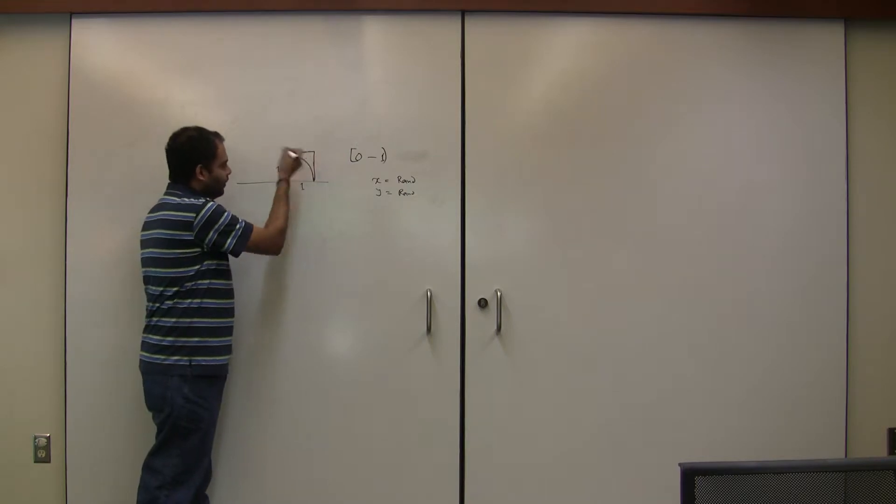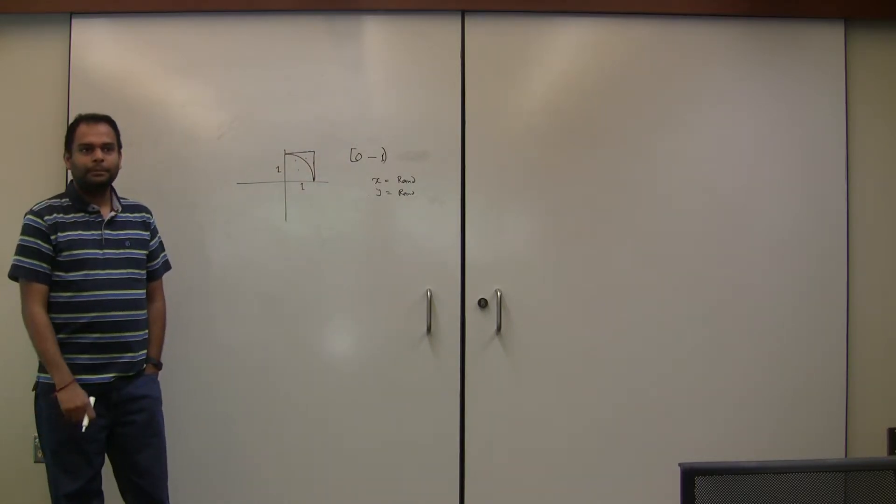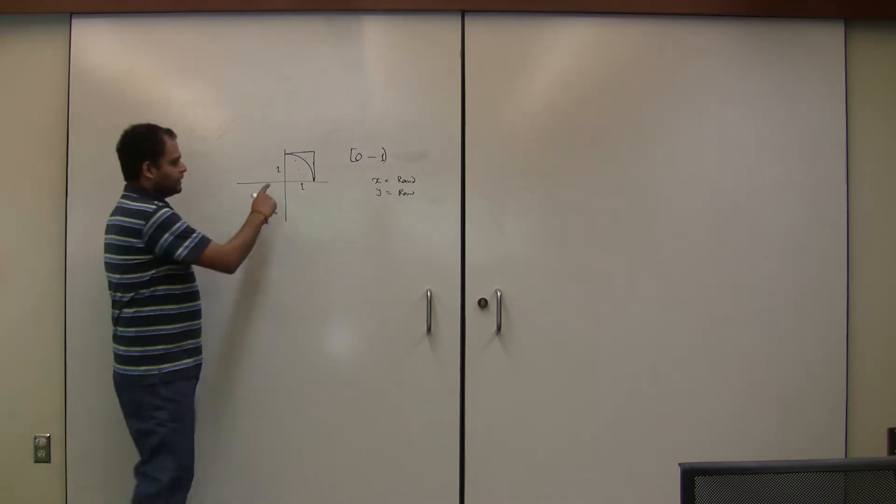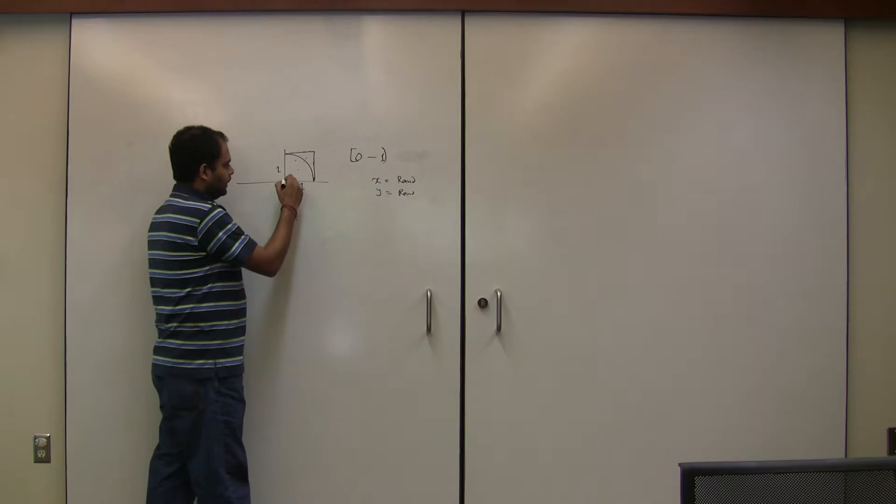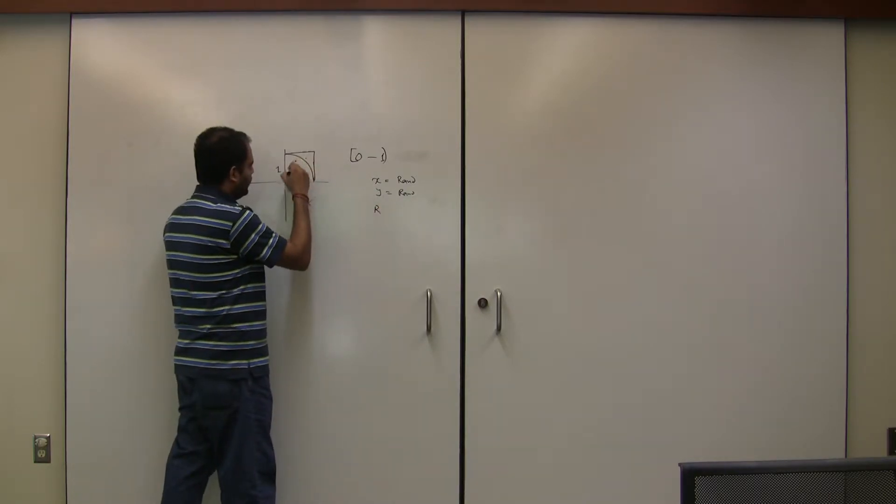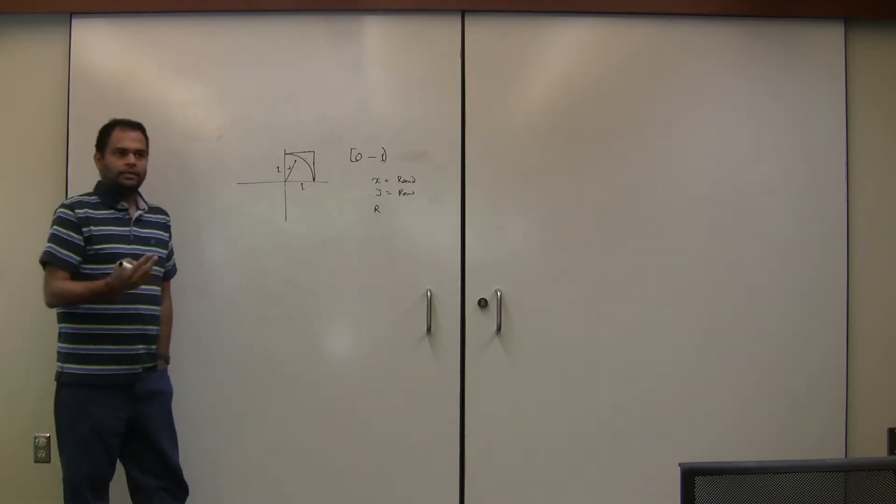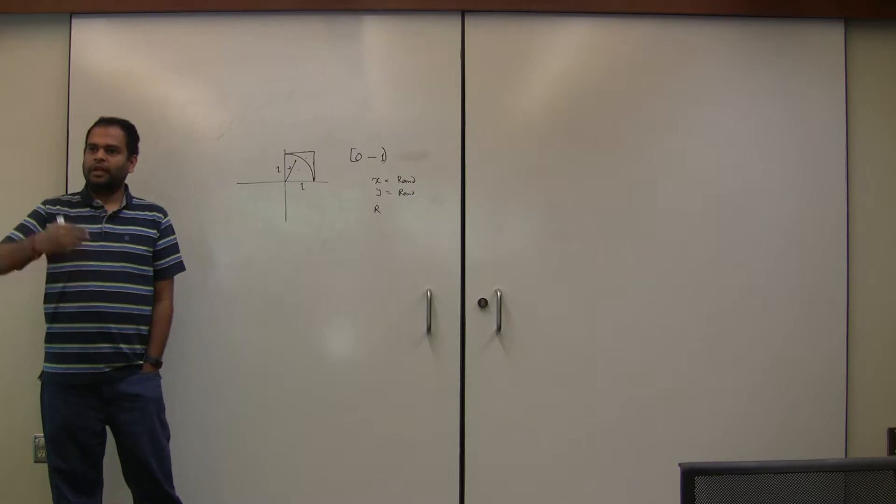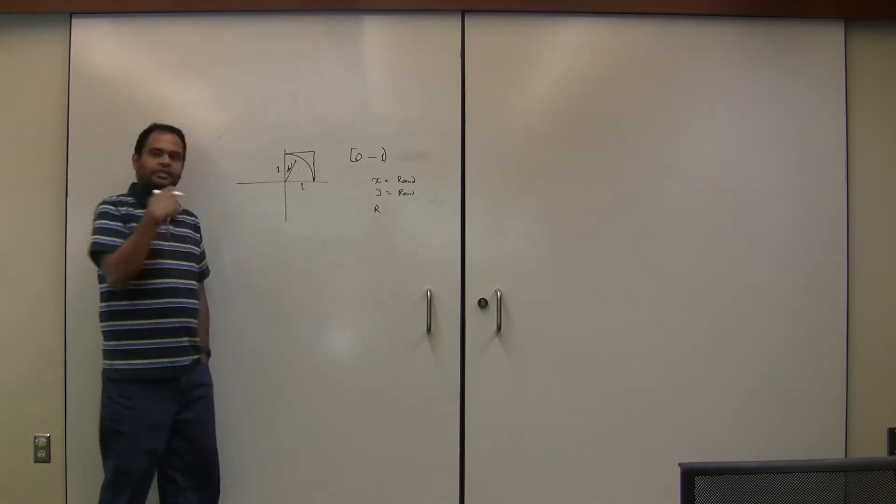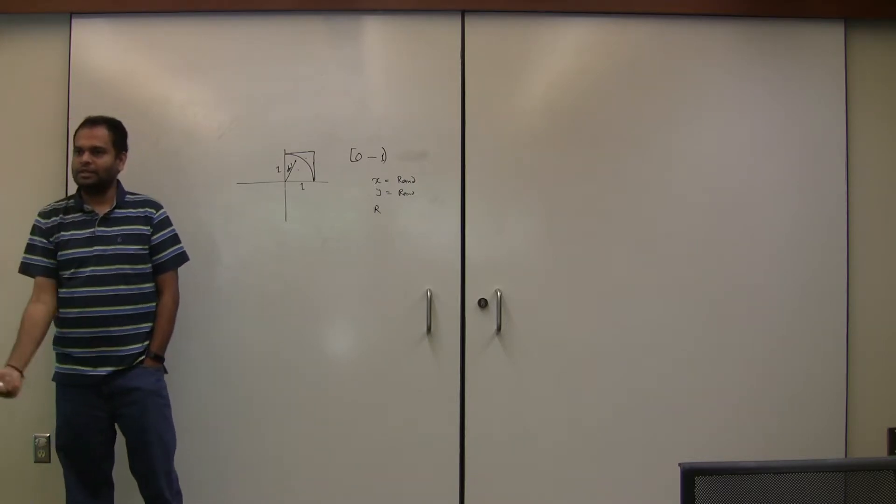What's the probability of it being in the circle? It's in the circle if the radius, this point, whatever that point is, if I draw this line, if this value is less than 1, it's within the circle. If it's greater than 1, it's outside the circle. If it's equal to 1, it's on the circle, correct?